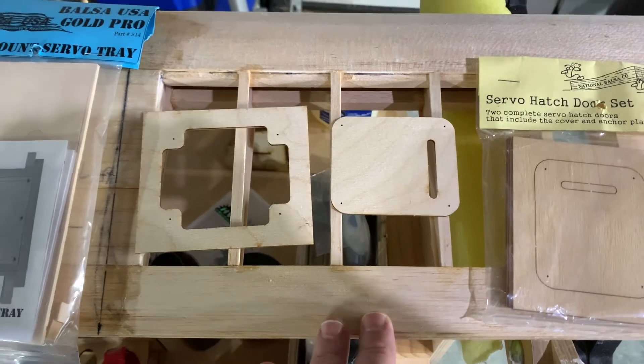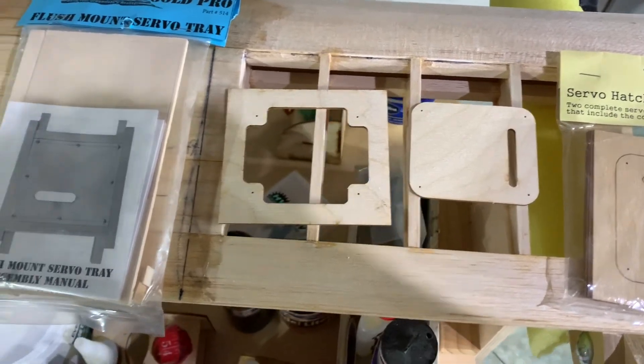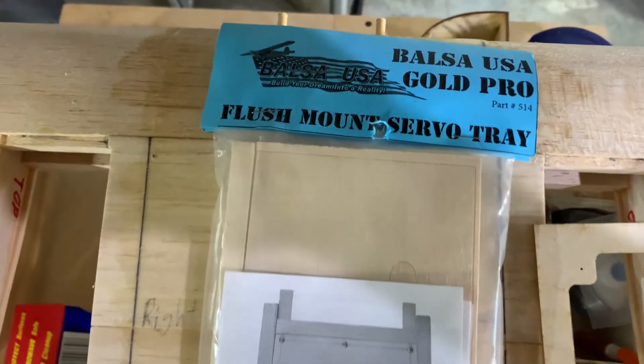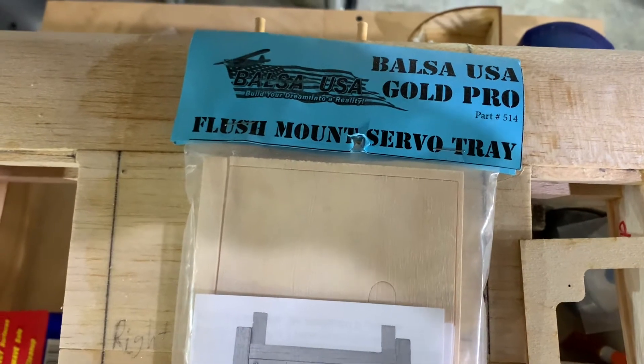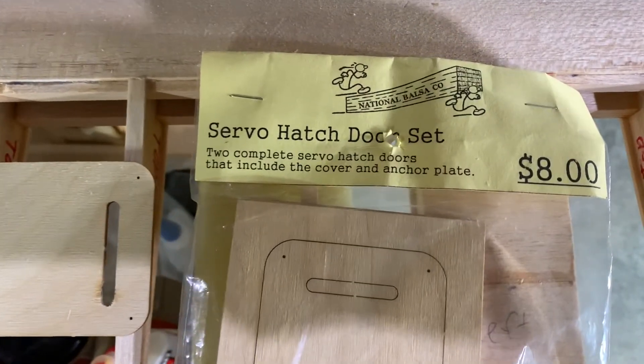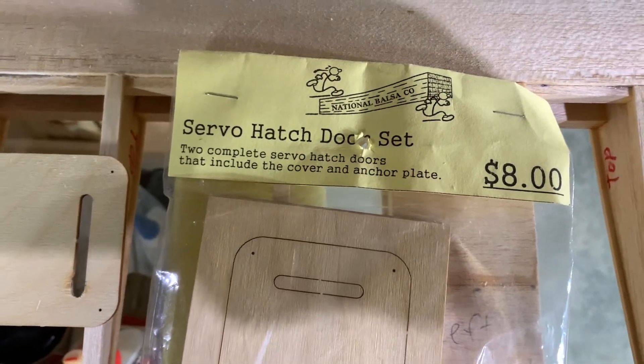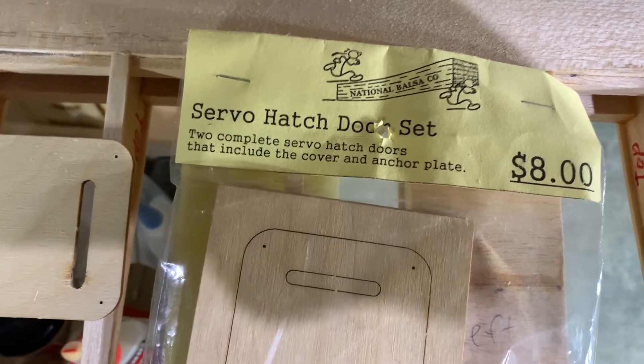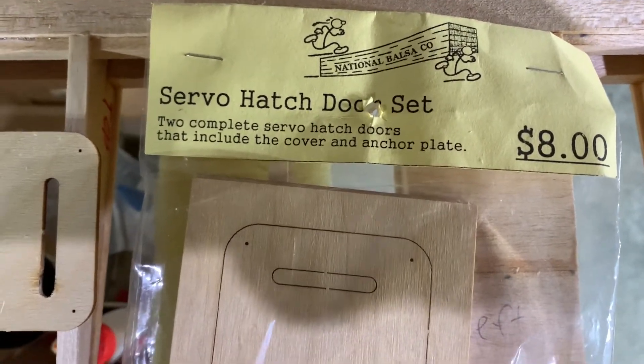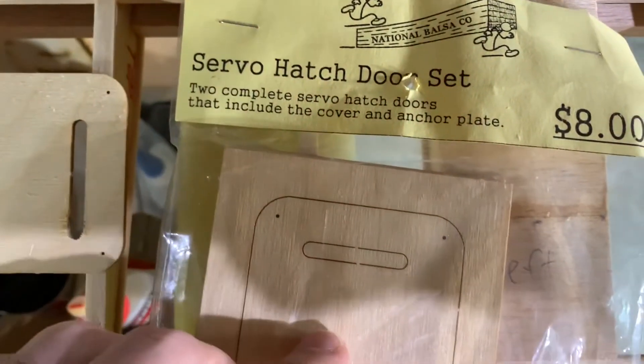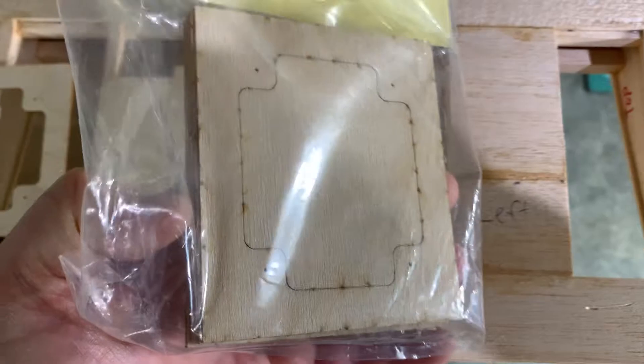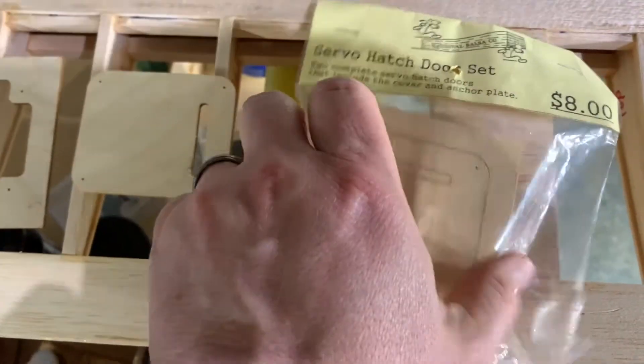You can do something from scratch and that works great. I picked up two different tray kits. One is from Balsa USA - they sell a flush mount servo tray kit. You can visit them at BalsaUSA.com. And there's another company called National Balsa Company. You can visit them if you do a Google search - they're still in business and they have a servo hatch set that includes the doors and a mounting plate, also laser cut.